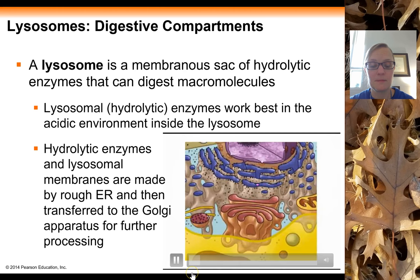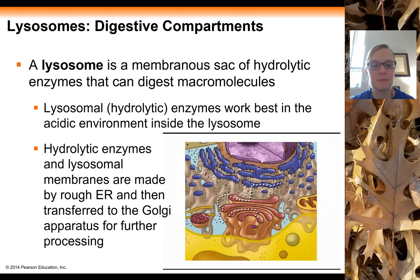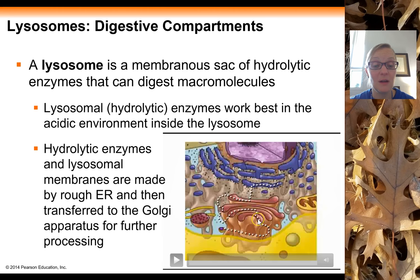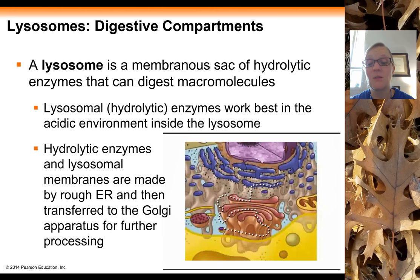As shown in the animation: proteins destined for lysosomes are made on ribosomes bound to the rough ER and move through the endomembrane system. The lysosomal protein-containing vesicle that buds from the Golgi apparatus becomes the lysosome itself. The protein is produced in the ER, packaged, shipped to the Golgi, polished as it moves through the sacs, and finally packaged on the trans side into a vesicle that becomes the lysosome — containing hydrolytic enzymes at low pH, surrounded by its membrane.